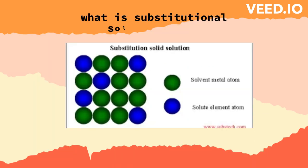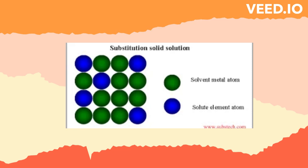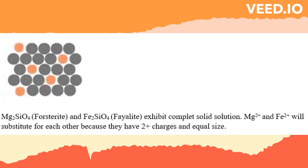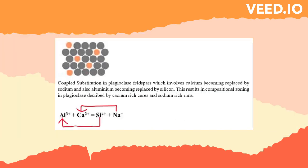Substitutional Solid Solution: The atoms of the minor component are substituted for the atoms of the major component on the lattice locations typically occupied by the solvent atoms in Substitutional Solid Solutions. There are two types of Substitutional Solid Solutions: Simple Substitution and Coupled Substitution.